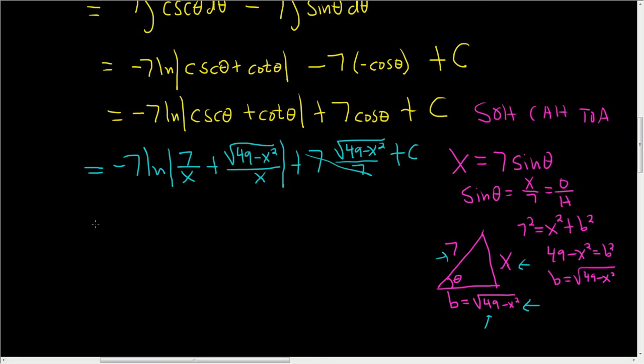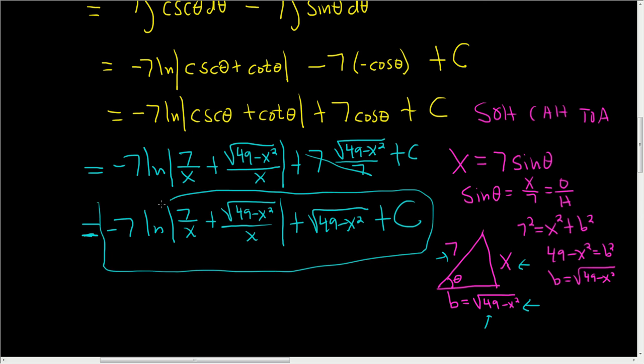Oh, looks like the 7's cancel. So this is equal to negative 7 natural log absolute value of 7 over x plus the square root of 49 minus x squared over x absolute value plus the square root of 49 minus x squared plus our constant c. And that is the final answer.